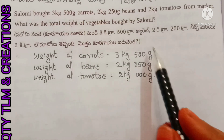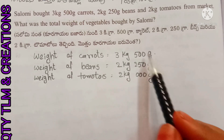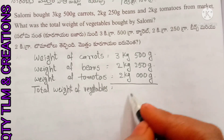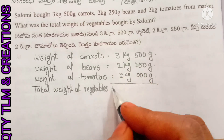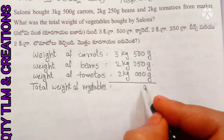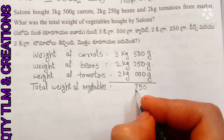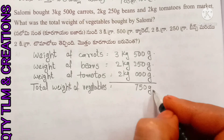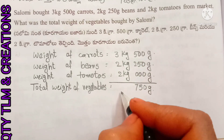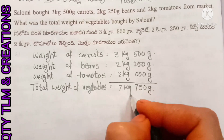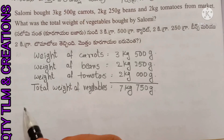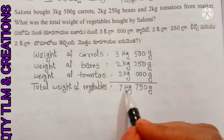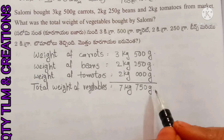Total weight of vegetables bought by Salami: here we have to add these vegetables. 500 plus 250 plus 0 gives 750 grams, and 3 plus 2 plus 2 gives 7 kilograms. Total weight of vegetables bought by Salami was 7 kilograms 750 grams.